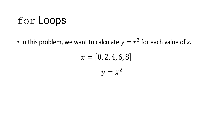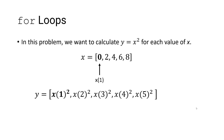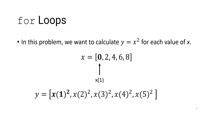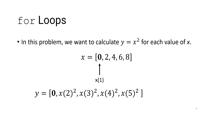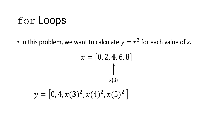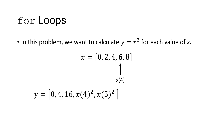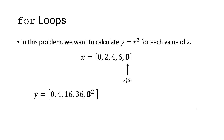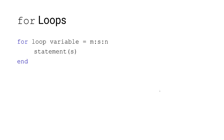In this problem we want to calculate y equal to x squared for each value of x, and this is an element-by-element operation. So we don't want to square the entire array — we want to square each individual element. So we'll square the first element, then the second element, the third element, the fourth element, and finally the fifth and final element.